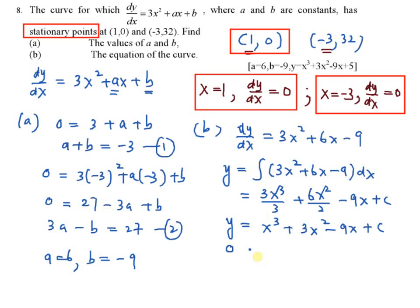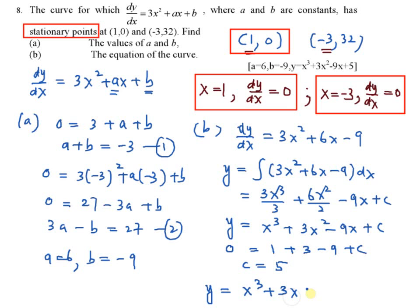With y equals 0 and x equals 1, you will get c equals positive 5. Therefore, the equation of the curve is y equals x cubed plus 3x squared minus 9x plus 5.